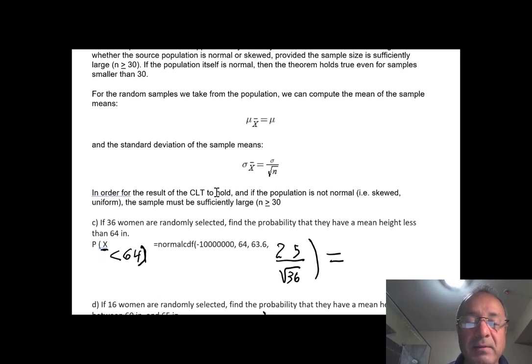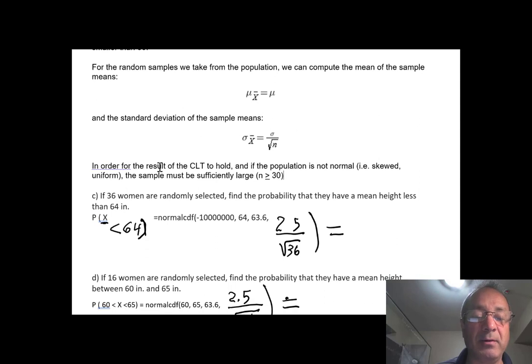In order for the result of the central limit theorem to hold, and if the population is not normal, you must have a sample size of more than 30. But if your population is originally bell-shaped, is normal, the sample size doesn't have to be more than 30. It can be any sample size, even a sample size of 3 or 4. It would still work. So let me show you how to apply the central limit theorem now.